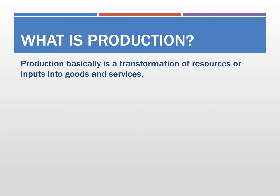Now we have a good concept of how we calculate profits for the firm. Economic profit is what we will use for the rest of the study in this class — whenever we talk about the firm's profits in later chapters, we always refer to economic profits. We would also like to think about how firms run productions, as firms make a transformation of resources or production inputs and turn them into goods or services that we buy in the market.